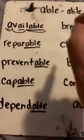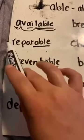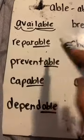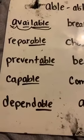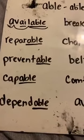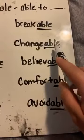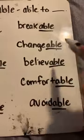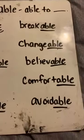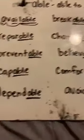You got this. Here we go. REPAIRABLE — it's able to be repaired. Next word, get ready. CHANGEABLE. Yes, CHANGEABLE — it's able to change.